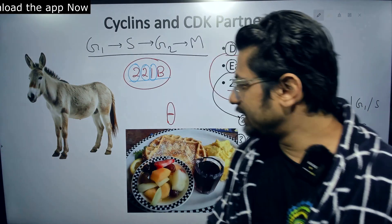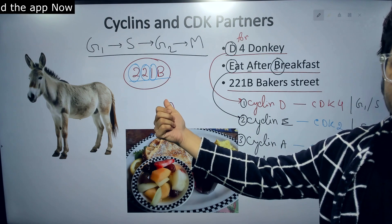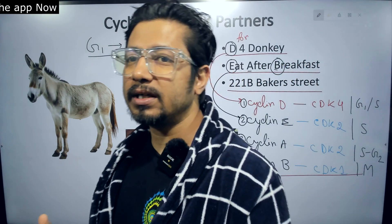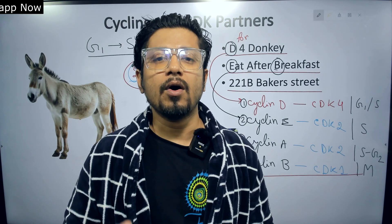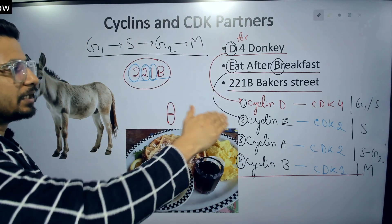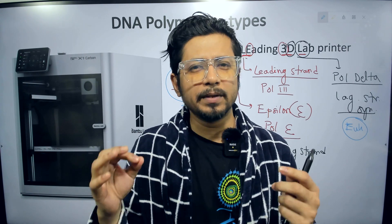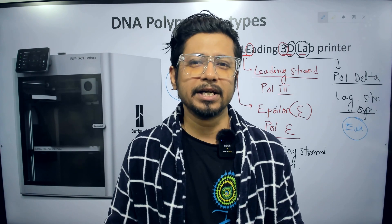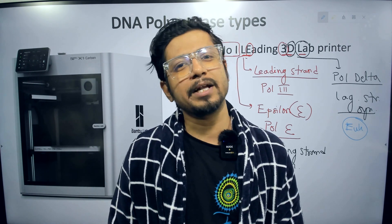D for Donkey, Eat After Breakfast, and 221B Baker Street — that's it. That's how easy it is to recall all the cyclins and CDK partners, and also to understand the different phases of the cell cycle where they work. I believe this video helps you understand and remember this concept, and revise the topic very fast just before the exam. These videos are going to be lifesavers. Watch them on this channel, and if you like the video, please hit the like button, share it with your friends and colleagues, and subscribe to get more videos like this in future. Thank you.